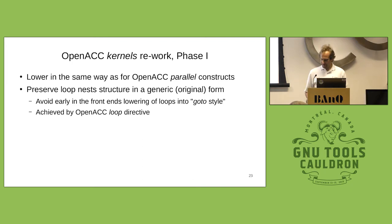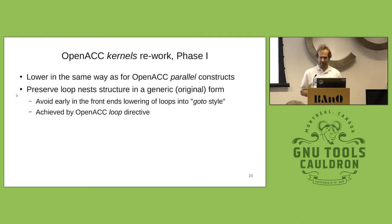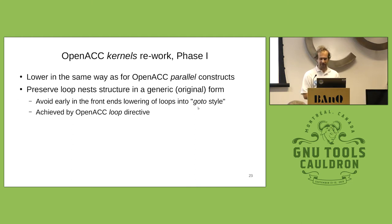In more detail, what's happening in this phase one work: change the lowering in the compiler so that kernels are lowered in the same way as parallel constructs, and preserve loop nests in their original form. In GCC, the Gimple IR doesn't have a separate construct to describe loops — instead it lowers them into goto-style loops with labels and comparison operations for the loop exit condition, which is difficult to analyze. Keeping it in the original for-loop form is achieved by adding a loop directive.